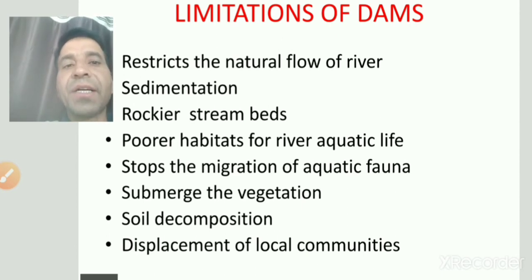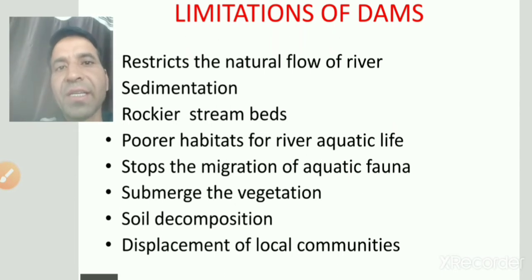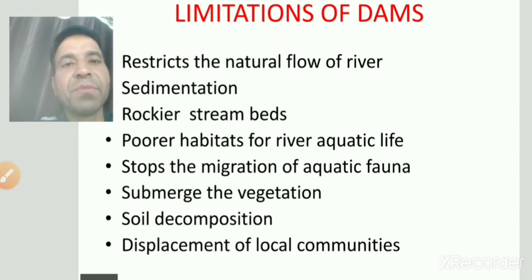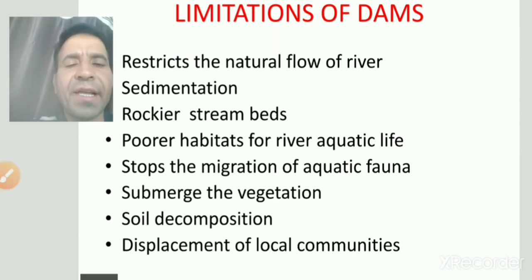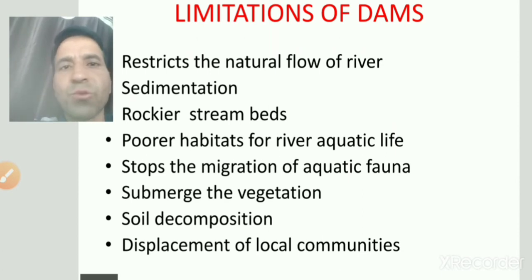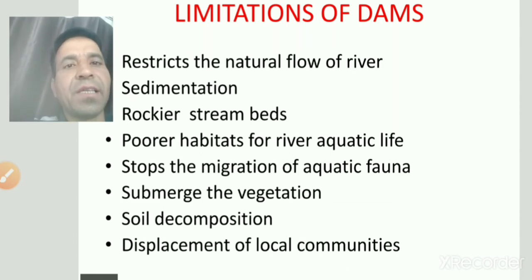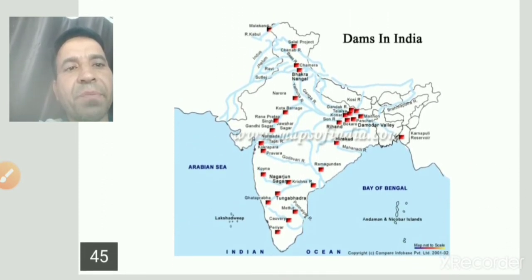Dams की कुछ limitations हैं। First: dams restrict the natural flow of the river — river का जो natural flow होता है उसको barrier की तरह काम करके रोकते हैं। Dams के अंदर जो water collection होता है उससे silt settlement होता है, जैसे एक small tank के bottom में sediment मिलेगा — वैसे ही rivers की aquatic life को सबसे ज्यादा नुकसान होता है।